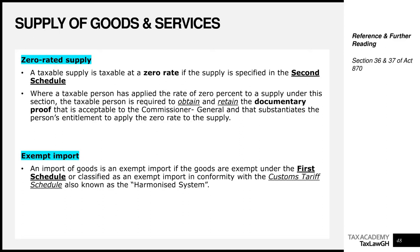Before we go to the second schedule, let's recap. The basic principles of VAT from our first video state that VAT applies to all supplies of goods and services made in Ghana, other than exempt supplies, which are listed on the first schedule. We also said VAT applies to the import of goods and services into Ghana, unless they are listed on the exempt schedule, which is the first schedule.